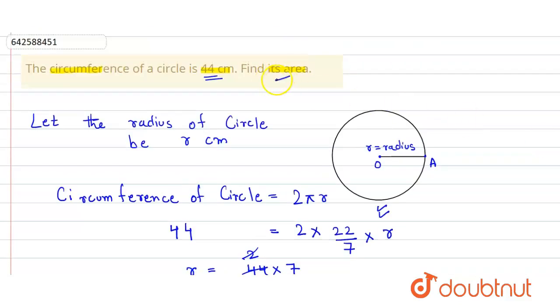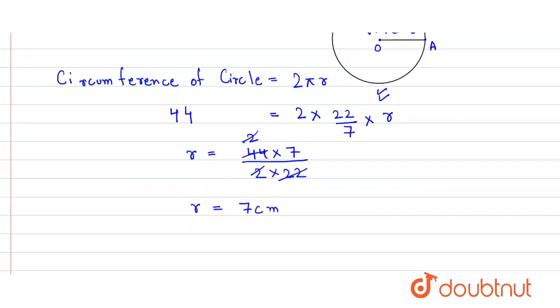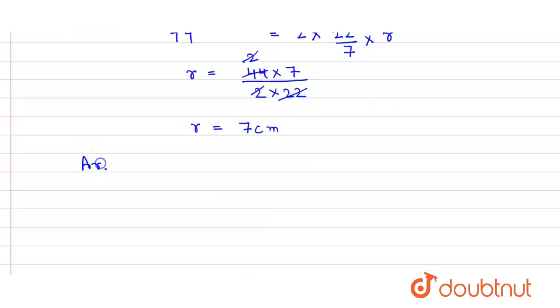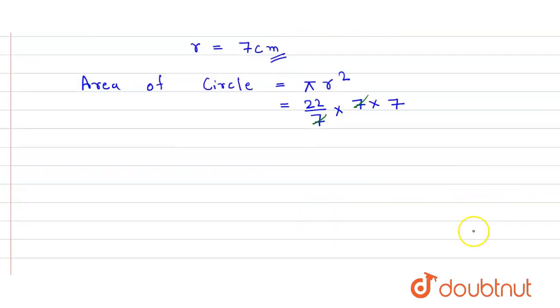Now we find out its area. So here the area of circle is equal to pi r squared which is equal to 22 by 7 times 7 times 7, which equals 154 centimeter square. So that's our answer.